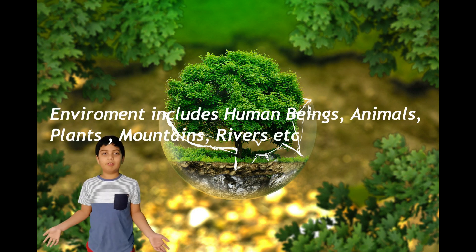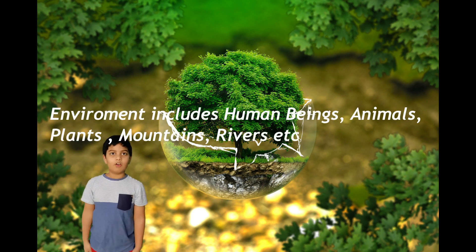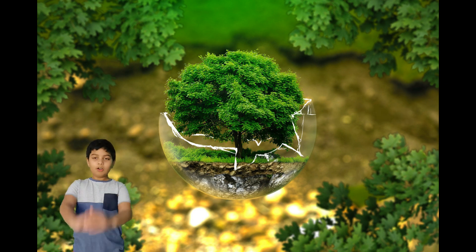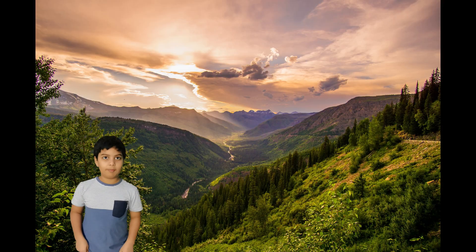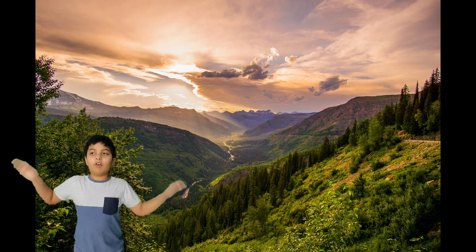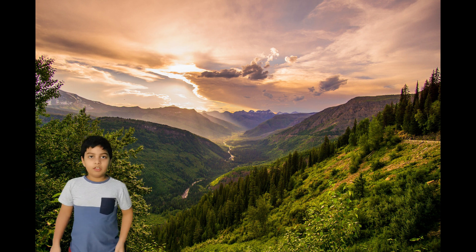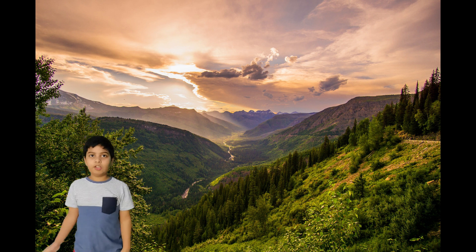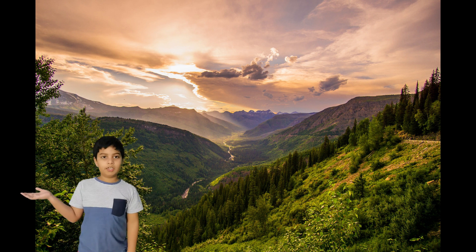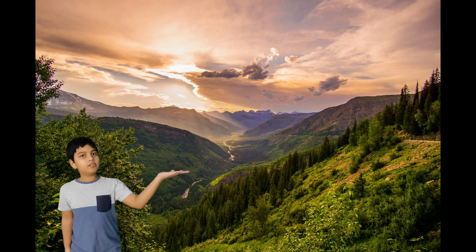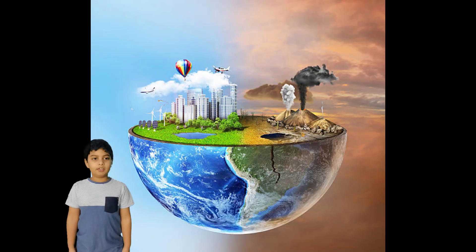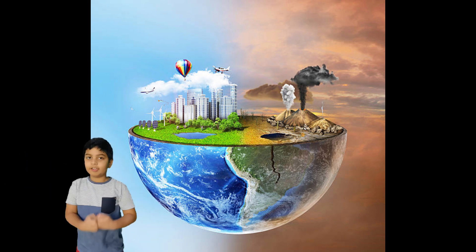Our family members and our neighbors all make up our immediate physical environment. Animals and plants also have their own environment in their surroundings. Let's take the example of a bird. Its environment consists of the sun, the air it breathes, the food it eats, the water it drinks, the tree it lives in, and the other plants and animals around it.